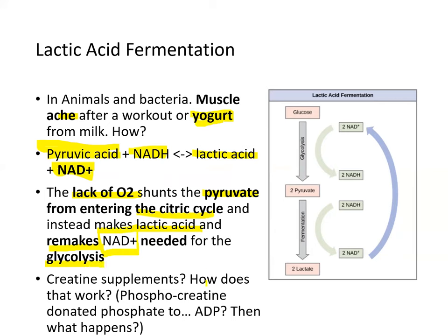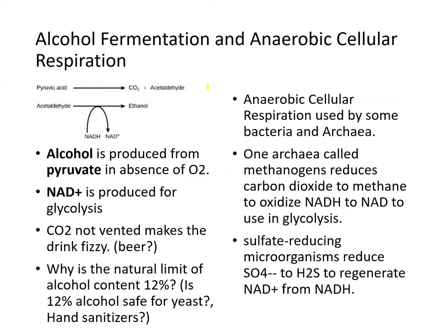Creatine supplements work because they are made up of phosphocreatine, and phosphocreatine donates its phosphate to ADP to make ATP. Another example of fermentation is alcohol fermentation in anaerobic cellular respiration. Alcohol is produced from pyruvate in the absence of O2 — pyruvate releases one CO2 and creates acetaldehyde, which regenerates NAD+ for glycolysis. The byproduct is ethanol, and if the CO2 is not vented, it makes the drink fizzy — this is how beer is fizzy.